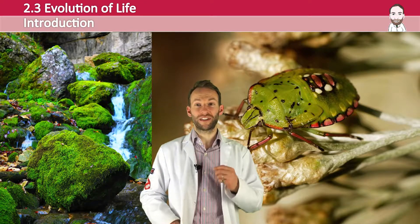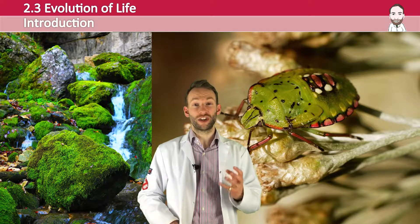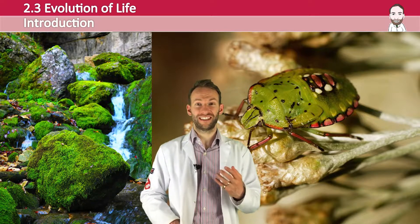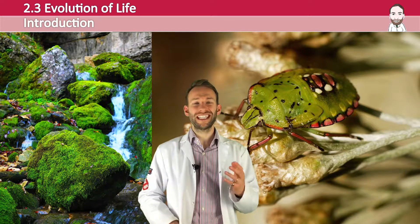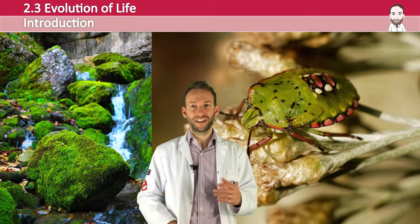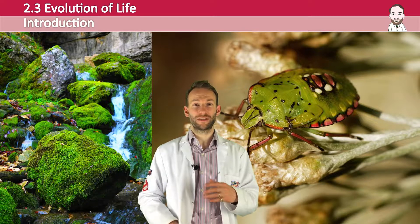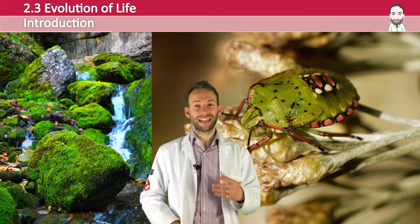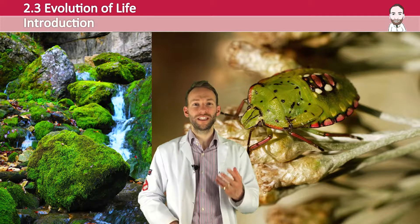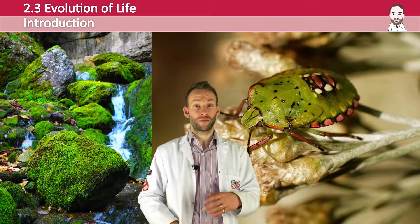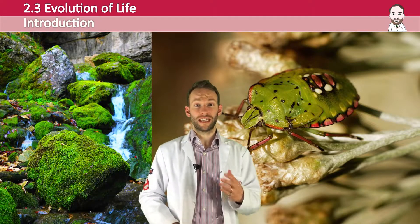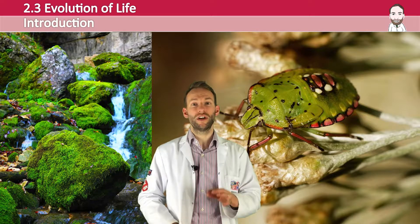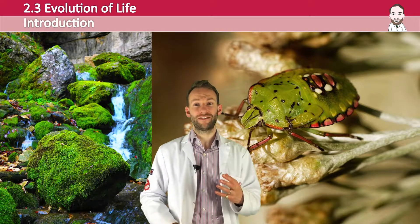Understanding evolution is critical to understanding biology — it's like the glue that holds the whole thing together. Did you know that there are up to 13,000 different species of moss and 380,000 species of beetle? How did all these different individuals come into being? Was it divine creation? Well, evolution explains how primitive life forms evolved into this incredible diversity of life that we have on our planet today.